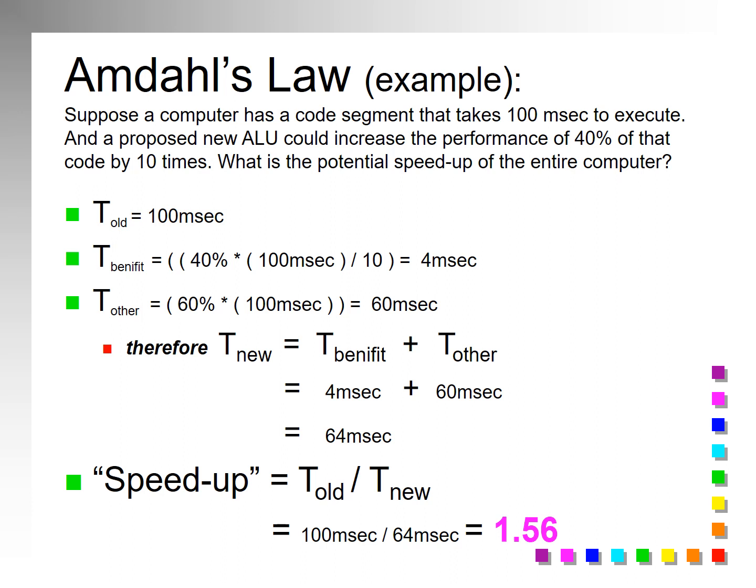A new arithmetic logic unit — a new ALU — could increase the performance of 40% of that code by 10 times. So only a part of it is getting sped up. So what is the potential speed up of the entire computer? Before we did anything new, we had 100 milliseconds to execute the code. And then the part of that that benefits is decreased by 10 — that's why you're dividing by 10 there.